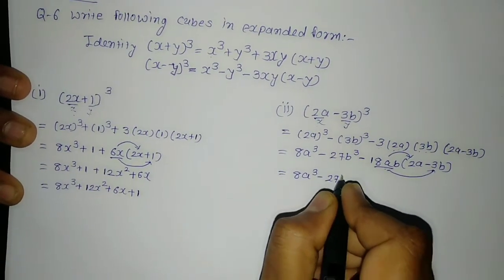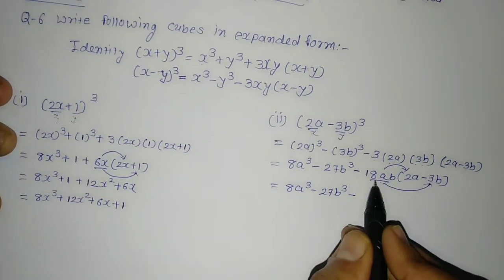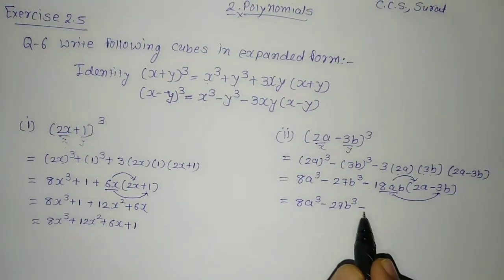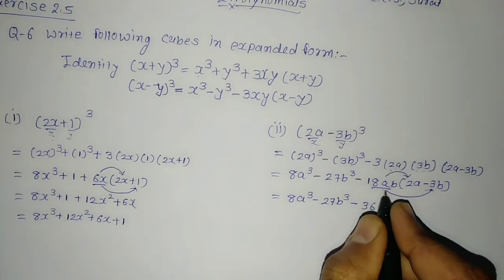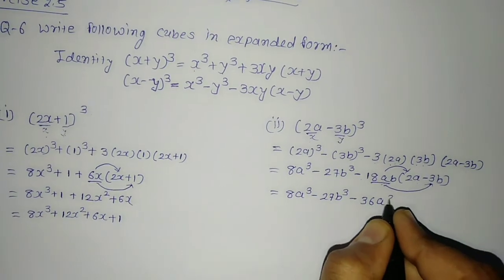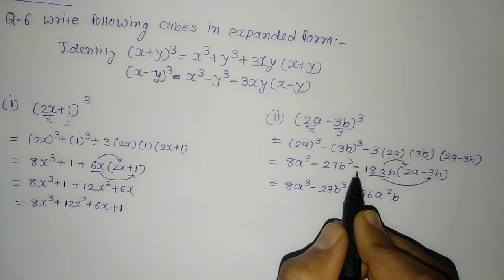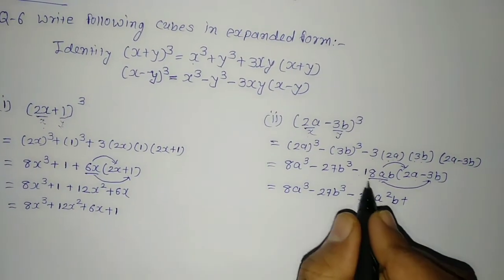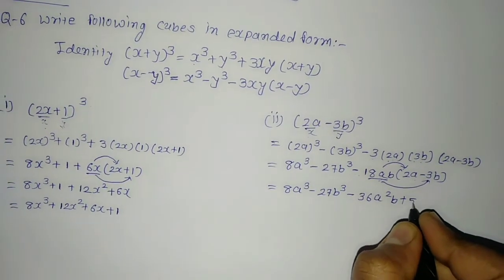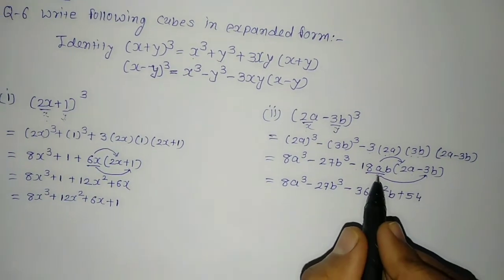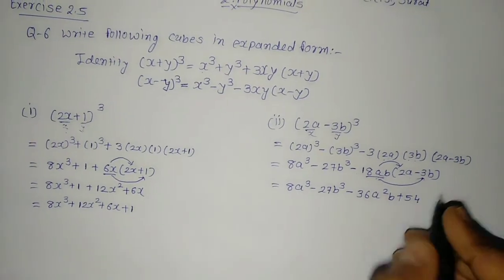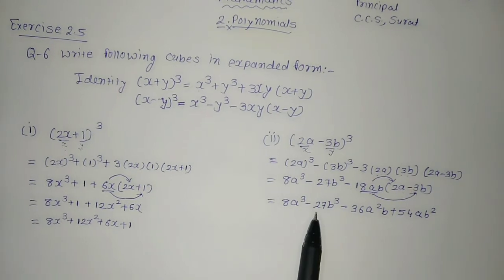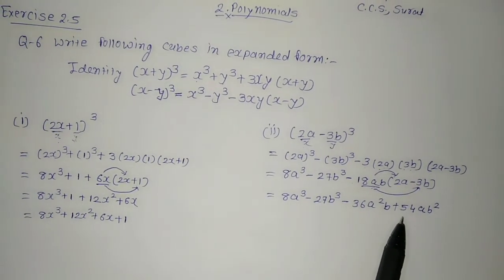So writing it all out: 8a cube minus 27b cube minus 36a squared b plus 54ab squared. That is the ultimate final answer for (2a − 3b) whole cube in expanded form.